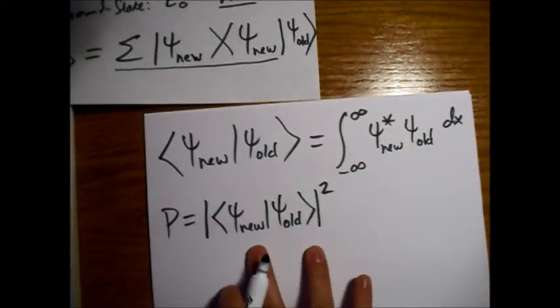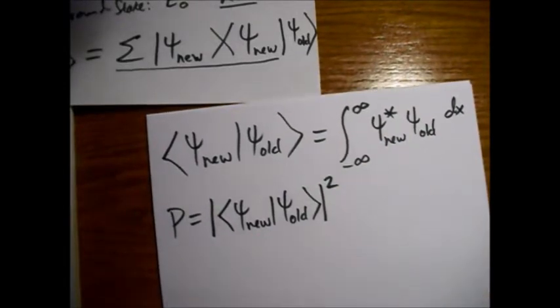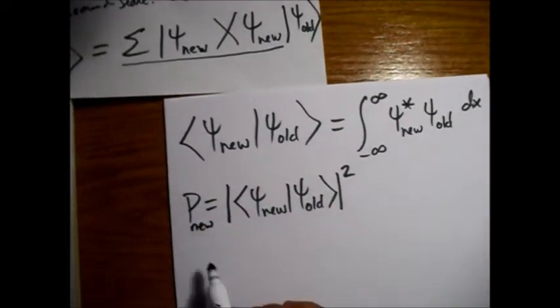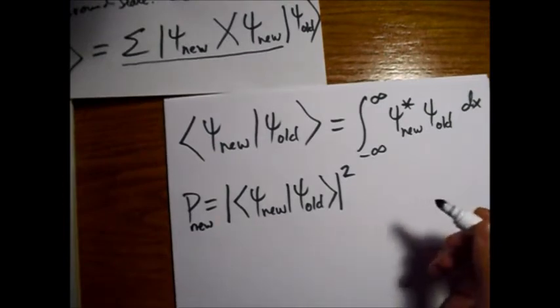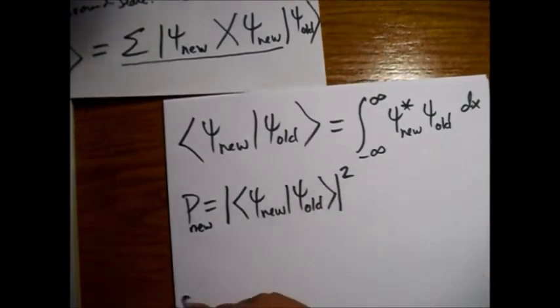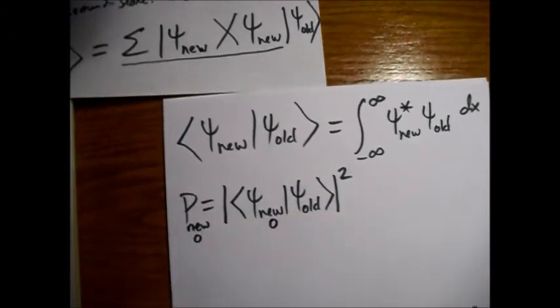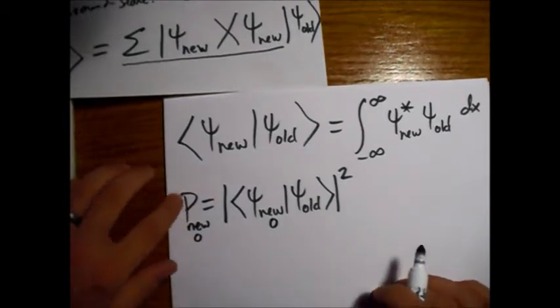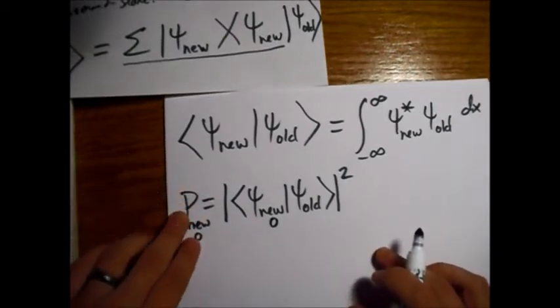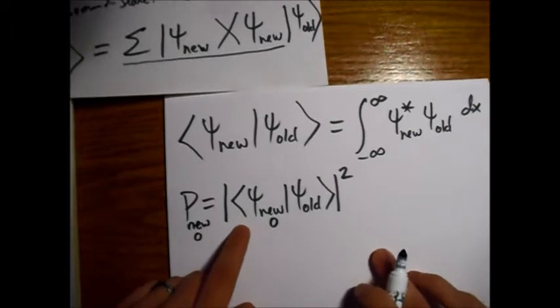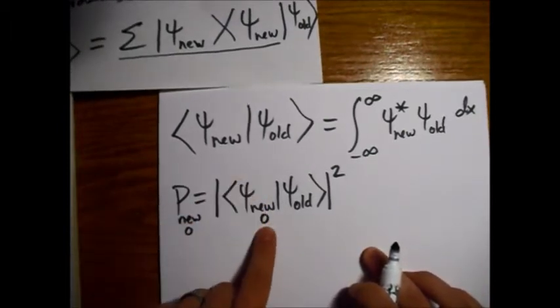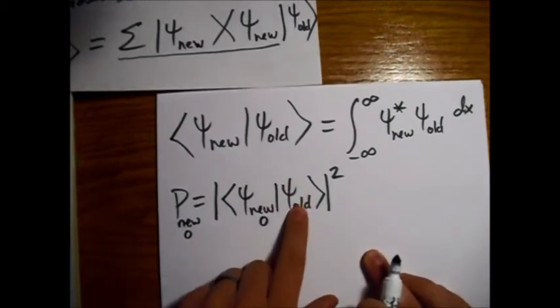So this notation is just a way of writing this. So basically we need to work out this integral right here. And then we can take the square of it and we'll get the probability.